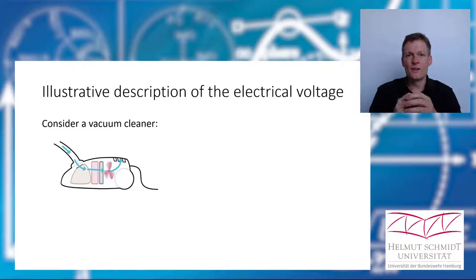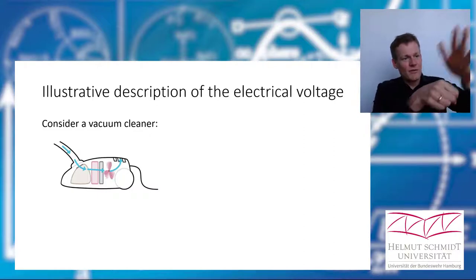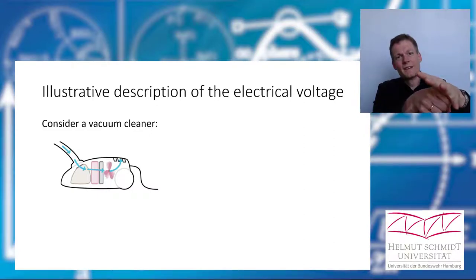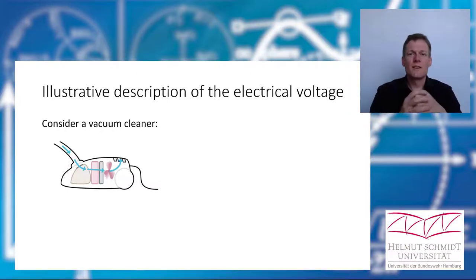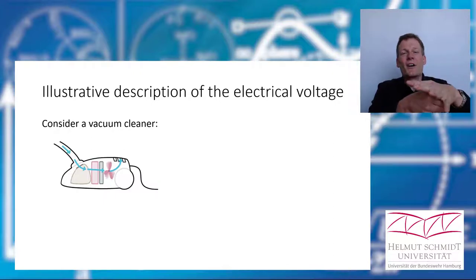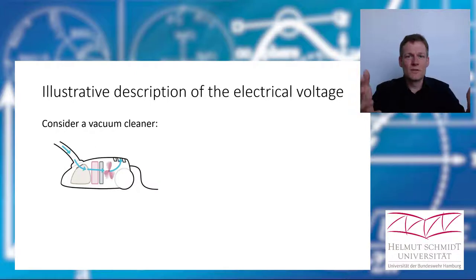For instance, if you take the vacuum cleaner hose and you cover it with your hand, then the vacuum cleaner still produces an under pressure. You can feel it on your hands, but the air current becomes zero.